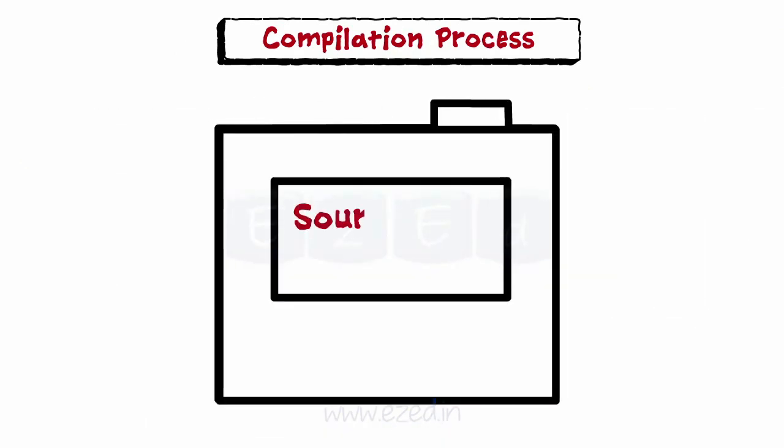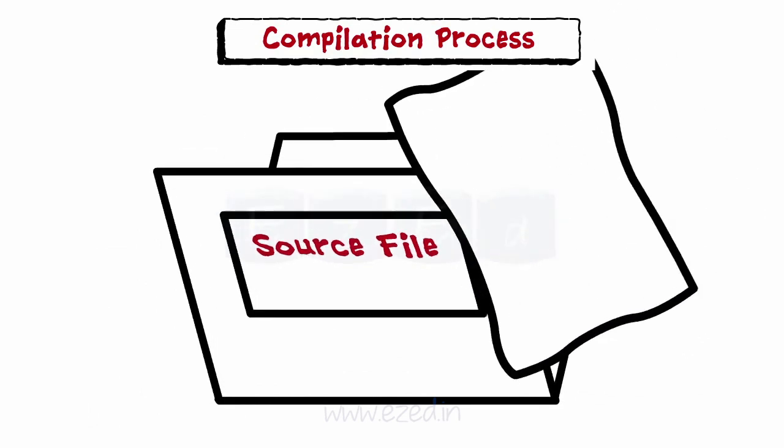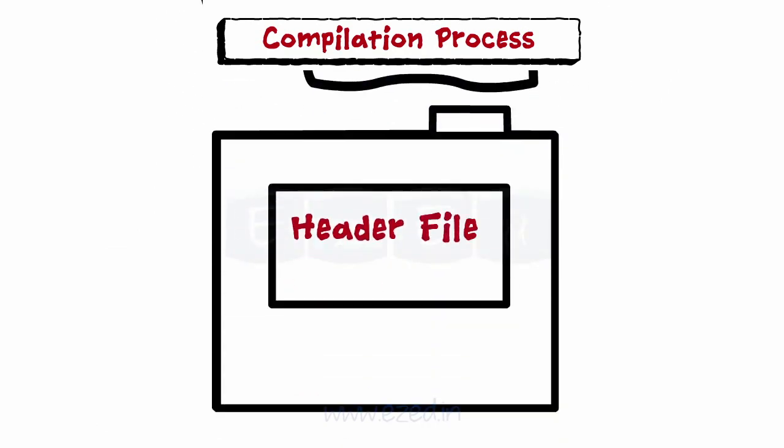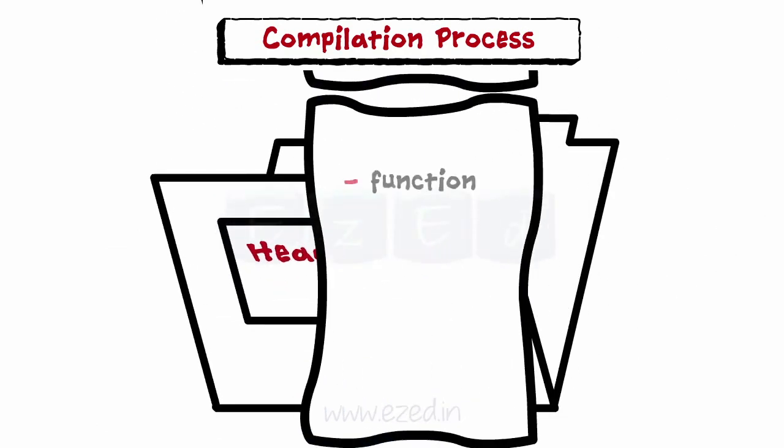Firstly, a source file is a file which contains the actual program and is saved with .C extension. Next is a header file. They contain function files and other macro declarations which must be included in the program. They have .h extension.